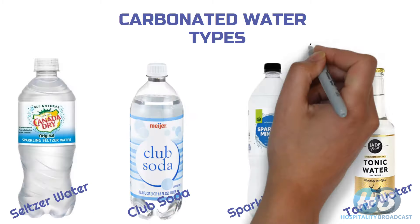Now let's summarize all forms of carbonated water. Seltzer is made by simply infusing CO2 gas in regular water, giving a pure water-like taste. On the other hand, if we add mineral salts such as potassium sulfate, sodium chloride, disodium phosphate, and sodium bicarbonate to enhance bubbles and taste, it becomes club soda.